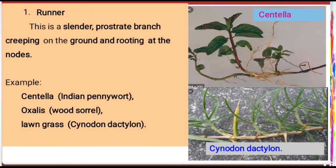The first sub-aerial stem modification is runner. Runner is a creeping stem with long internodes — a very important exam question. It is slender, prostrate, and creeping. The key point is that it roots at the node region. Examples: Centella asiatica, where roots form at the node region, and Cynodon dactylon (a monocot grass) where roots also form at nodes.